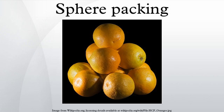In three-dimensional Euclidean space, the densest packing of equal spheres is achieved by a family of structures called close-packed structures. One method for generating such a structure is as follows: consider a plane with a compact arrangement of spheres on it. For any three neighboring spheres, a fourth sphere can be placed on top in the hollow between the three bottom spheres. If we do this everywhere in a second plane above the first, we create a new compact layer. A third layer can be placed directly above the first one, or the spheres can be offset vertically above another set of hollows of the first layer.